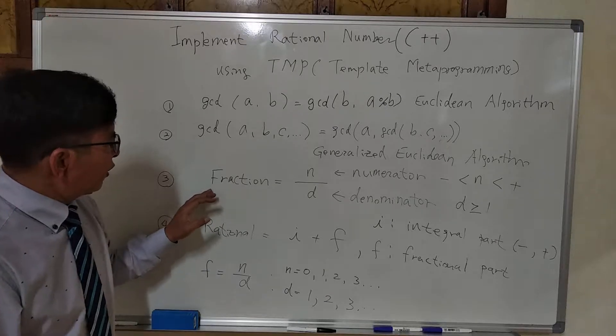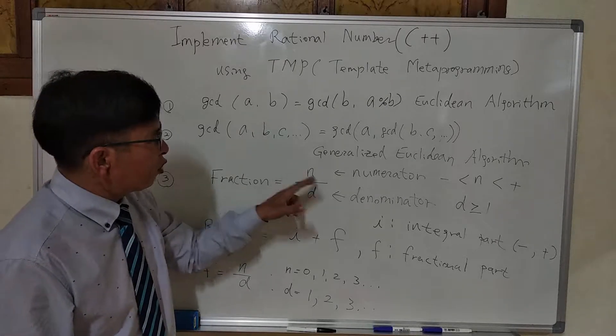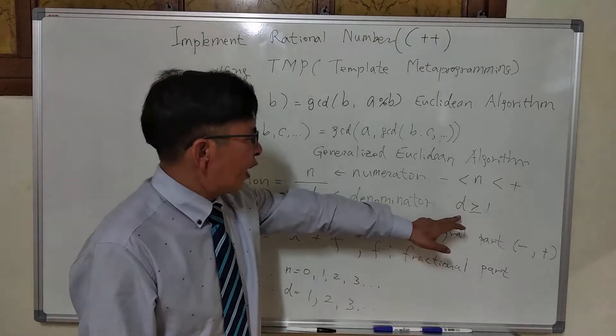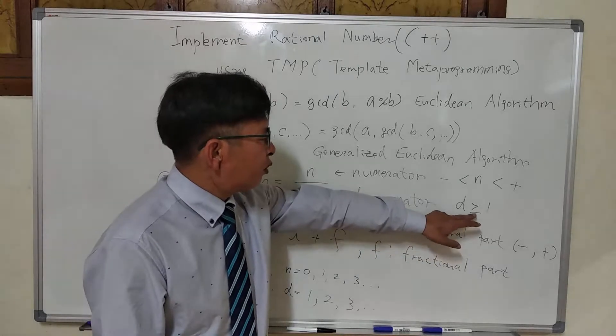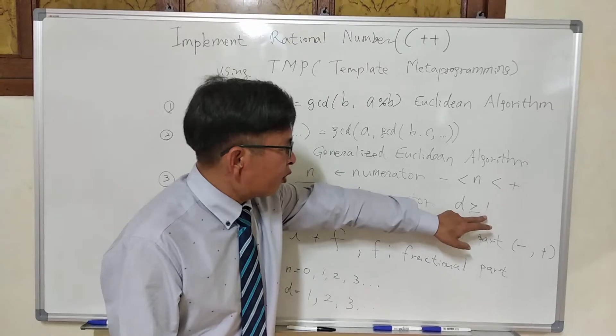Then we will define class fraction. It has two members, like numerator and denominator. Numerator can be any number greater than or equal to 1, any integer greater than or equal to 1.